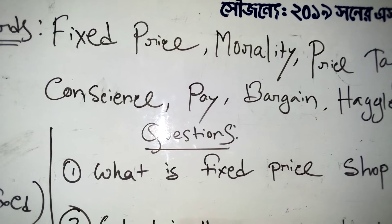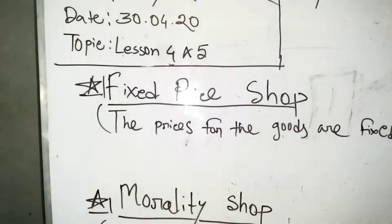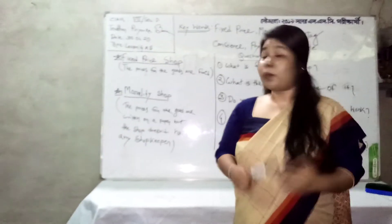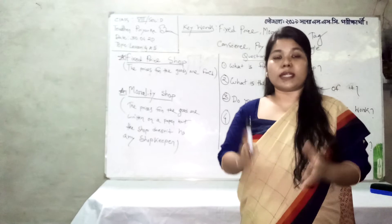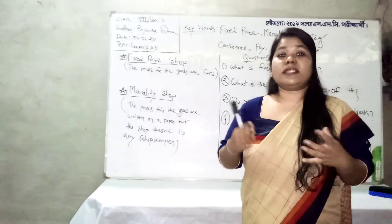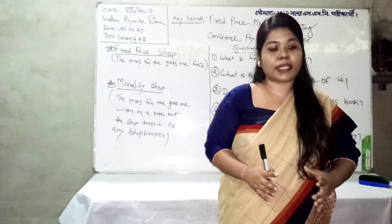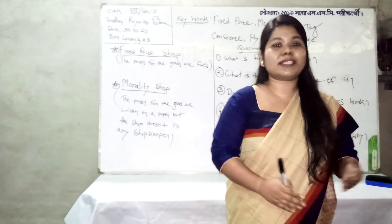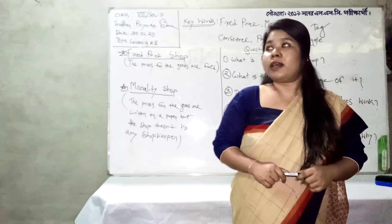Now going to the first passage, Lesson 4: Fixed Price Shop. I hope you all have your books with you — please open your book and go to the passage. I'm giving an overview of the whole chapter. The passage covers how the fixed price shop works and what the advantages and disadvantages of such shops are.